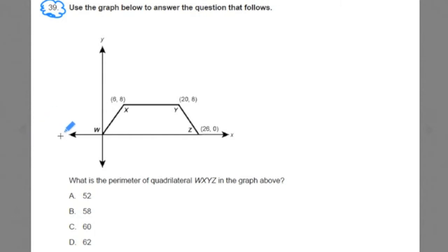It says for number 39, use the graph below to answer the question that follows. We're given a graph and it asks, what is the perimeter of quadrilateral WXYZ in the graph above? Let's just really quickly point out the x and y axis, this is a coordinate plane, these are ordered pairs, these are all algebraic concepts. And then the perimeter of the quadrilateral, well, perimeter is the distance around a shape and quadrilateral is a four-sided shape. So in this problem, we're going to do some geometry, find the perimeter around this quadrilateral by using some algebra to get the measurement of each one of these sides.